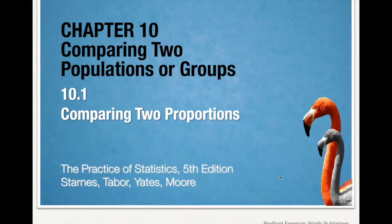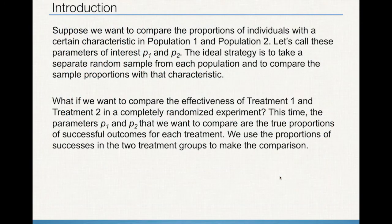Hello everybody, it's Dave here. Today we're going to start our next lessons on significance testing by comparing two populations or groups using proportions and means. If you haven't done the previous unit's work on significance testing using one proportion and one mean, go back and do that first, because what we're going to do is very much the same thing except now we have a data set that involves two different proportions.